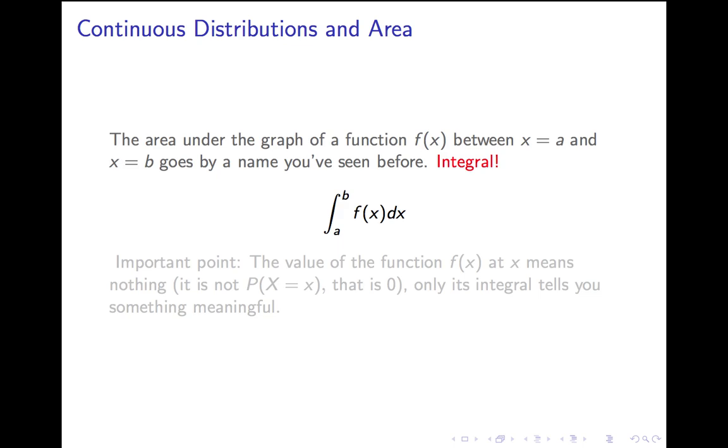And here's the really, really important point. That integral tells you something about the probability, but the function itself doesn't. The value of f of x at x doesn't tell you anything. In particular, it's not the probability of the woman's height being exactly x, because that's zero for each x.